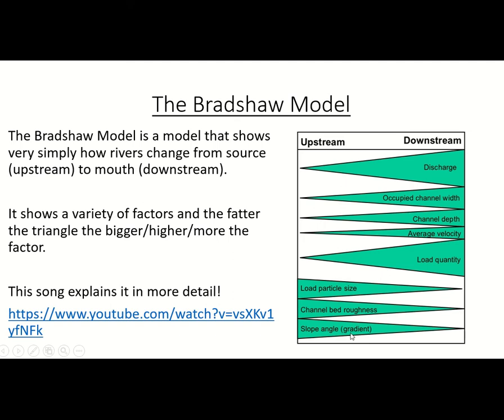At this point you might be thinking: if the angle of slope is getting less, why is the river getting faster? Surely a steeper slope means the river moves at its fastest. And ordinarily you'd be absolutely right, because that is how gravity works — greater gravitational potential energy means it's going to move faster.